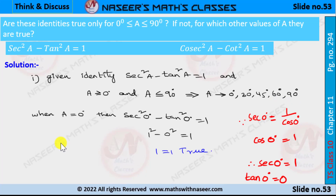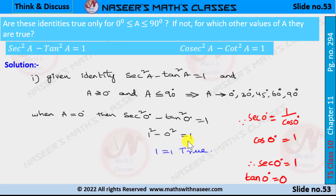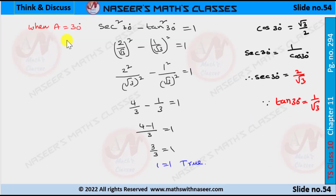First, we substitute a = 0° into equation 1: sec²0° − tan²0° = 1. We know that sec²0° = 1/cos²0° and cos²0° = 1, so sec0° = 1. Also tan0° = 0. So we get 1² − 0² = 1, which gives 1 − 0 = 1, therefore 1 = 1. This is true for a = 0°.